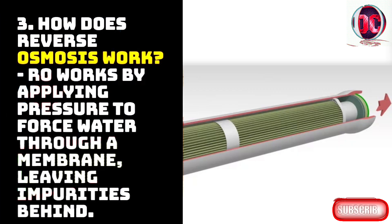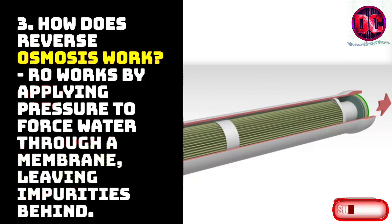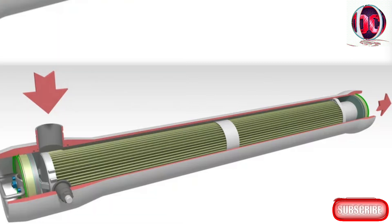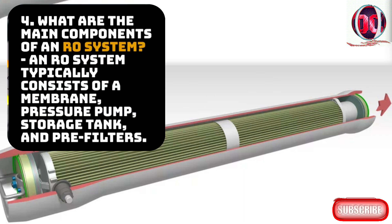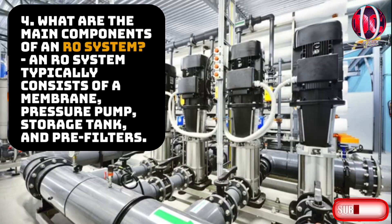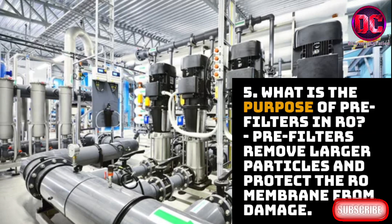3. How does reverse osmosis work? RO works by applying pressure to force water through a membrane, leaving impurities behind. 4. What are the main components of an RO system? An RO system typically consists of a membrane, pressure pump, storage tank, and pre-filters. 5. What is the purpose of pre-filters in RO? Pre-filters remove larger particles and protect the RO membrane from damage.